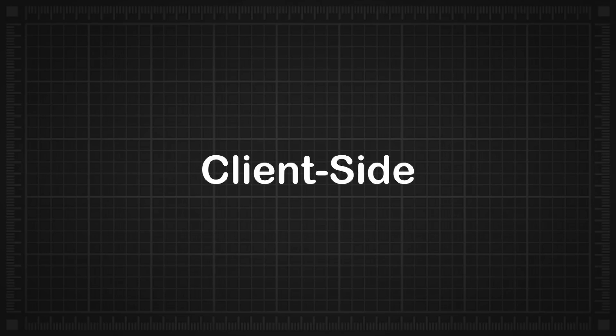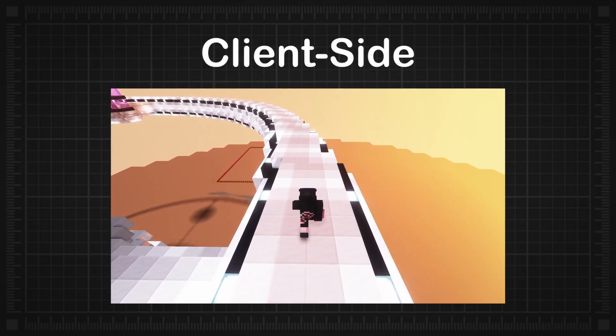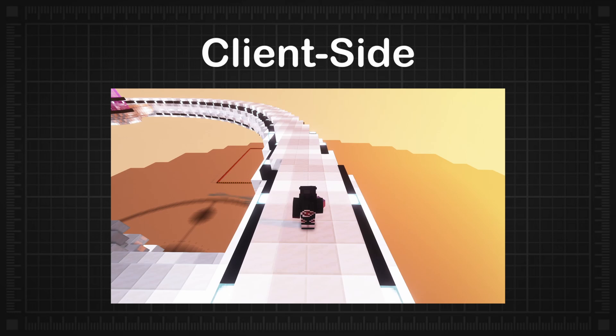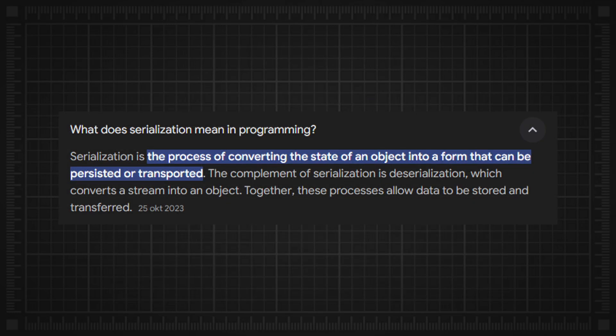Client side: When a client performs an action that generates data, like picking up a shulker box, this data is serialized into packets. Each packet has a specific size, which includes both the data and any metadata needed for the server to process it.